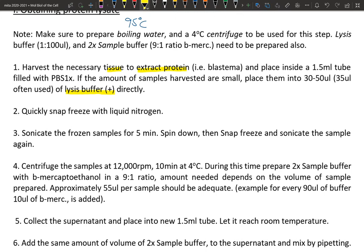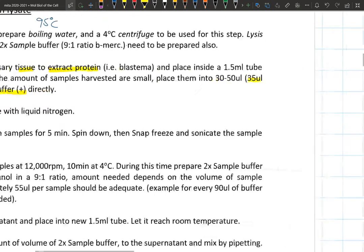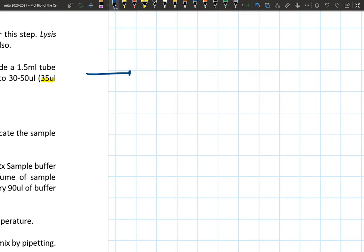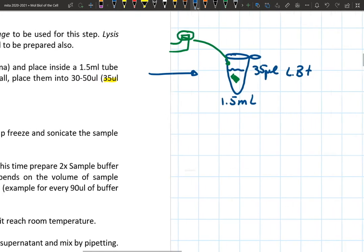How much you're going to use will vary, but usually in my experiments I would put 35 microliters of lysis buffer positive. Here's a depiction: you have your 1.5mL tube, your little sample—imagine a limb I've cut off—add your tissue sample and fill with 35 microliters of lysis buffer positive.